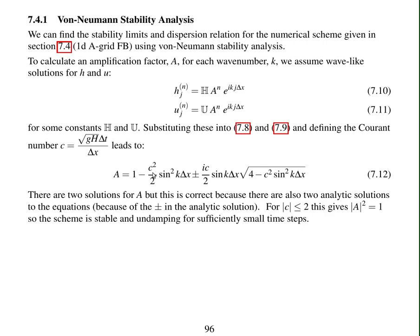When you find the magnitude of the complex number, multiply the complex number by its complex conjugate, you'll find that the magnitude of A is always equal to one. So this scheme is stable, and it doesn't damp any waves. The amplitude of all waves is maintained, as long as the time step is sufficiently small, the magnitude of C less than or equal to two.